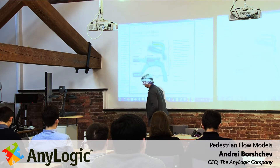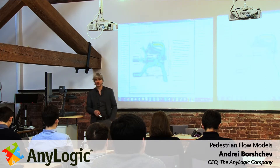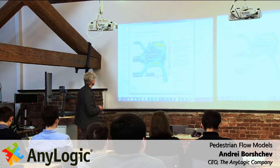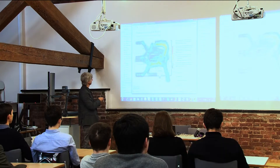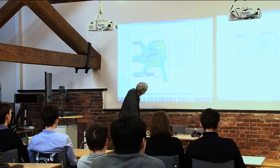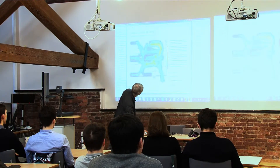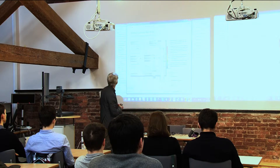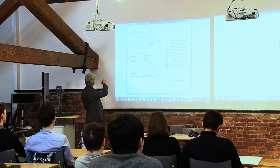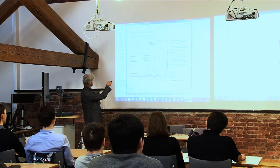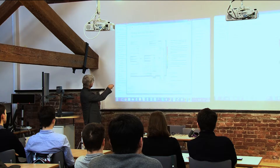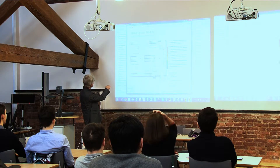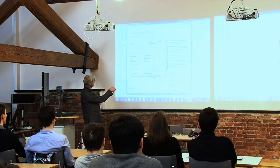This is a real subway station in France, namely in Marseille. There are several pedestrian flows. I'll turn off the density map for a while. Over there are platforms. This I think is one of the entrances, so we have people flowing from here all the way through the turnstiles to the platforms and vice versa.